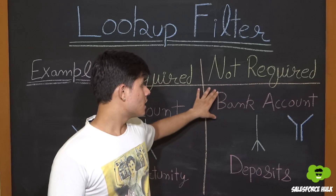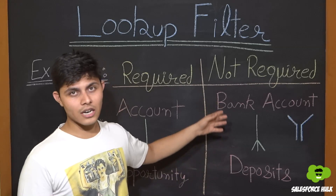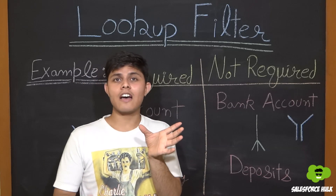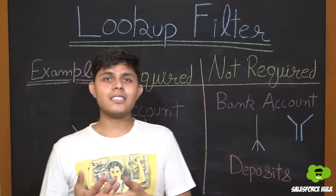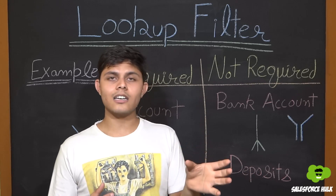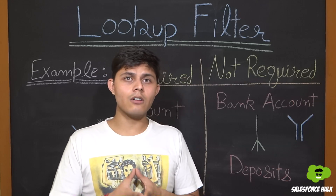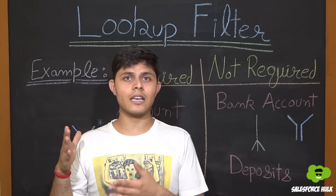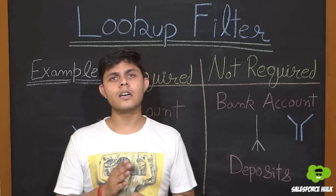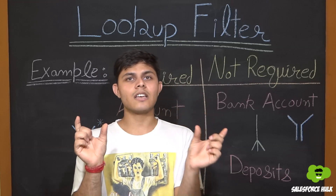Here comes a different scenario. There are two objects: Bank Account and Deposits. These two are custom objects related to each other, where Bank Account is on the one side and Deposits is on the many side, because a bank account can have multiple deposits. Let's take a scenario where you are creating a deposit record in which a bank account needs to be related, and current accounts are the ones in which deposits are made regularly. You will set a lookup filter to show bank accounts where the account type is current account.